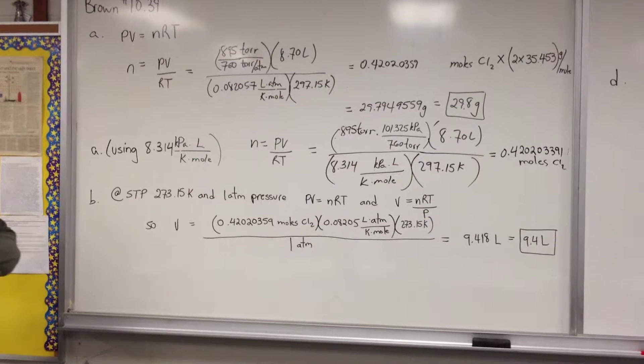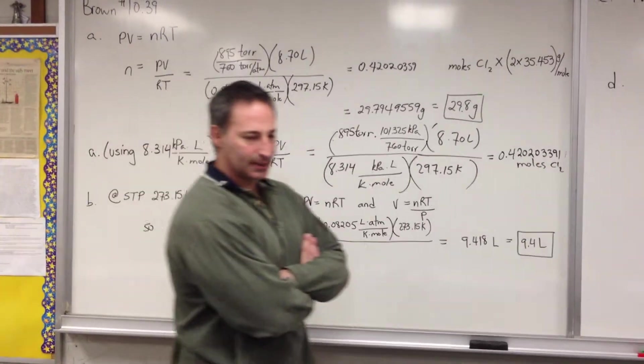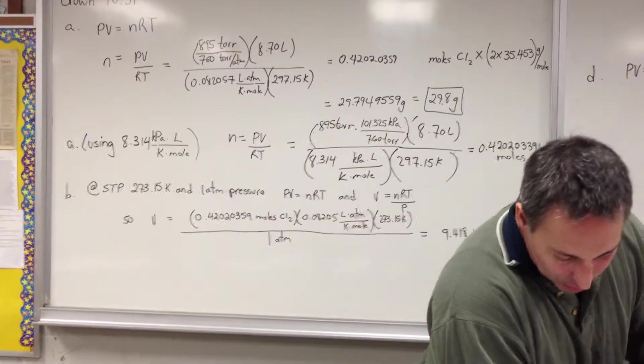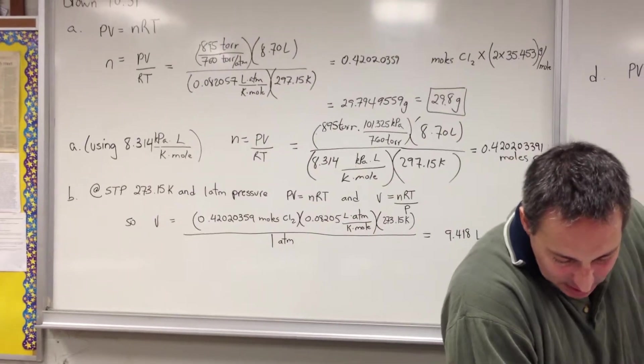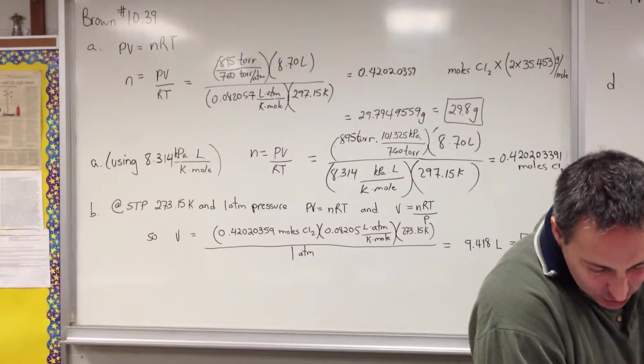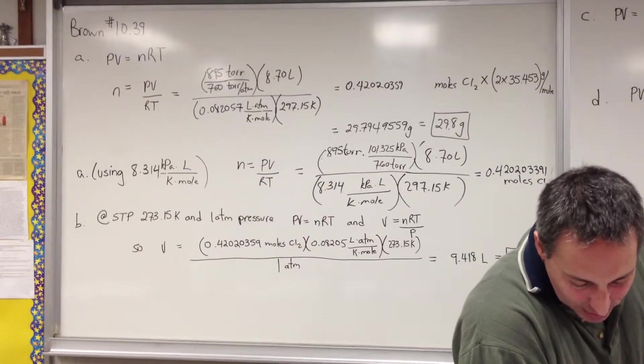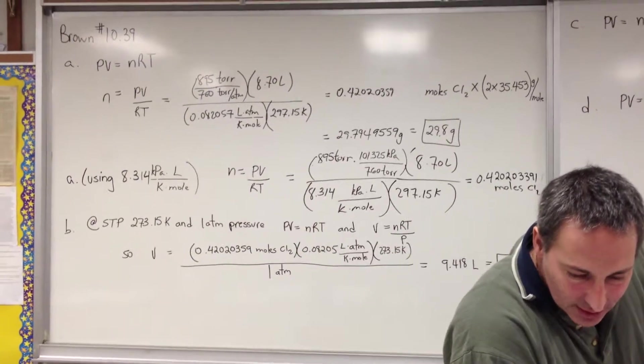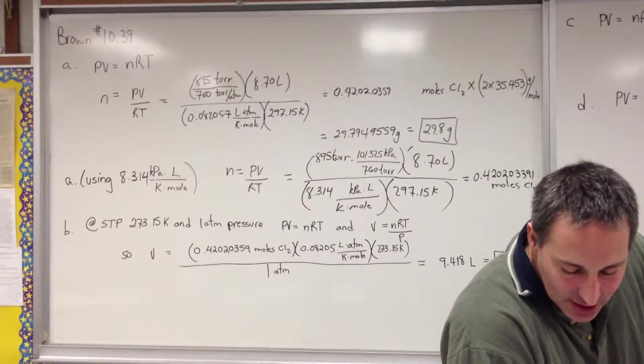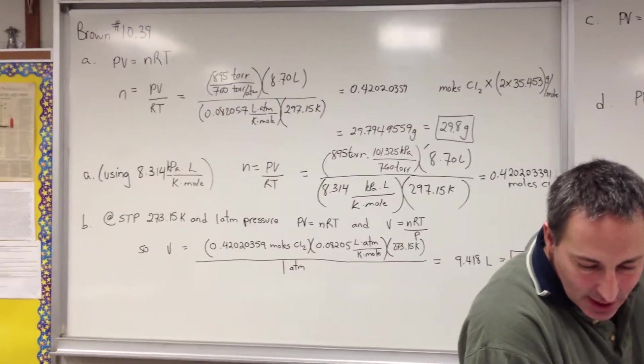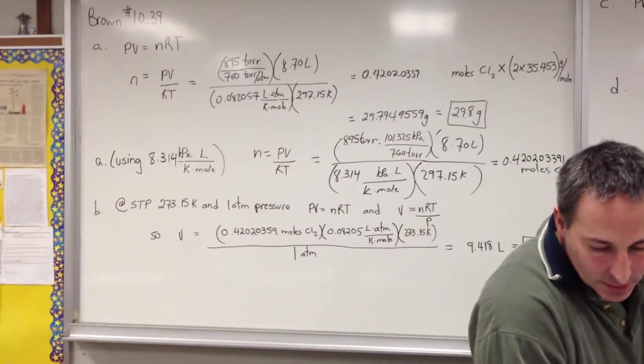First the question is: chlorine is widely used to purify municipal water supplies and to treat swimming pool waters. Suppose that the volume of a particular sample of chlorine gas is 8.7 liters at 895 torr and 24 degrees Celsius. Part A asks, how many grams of chlorine are in the sample?